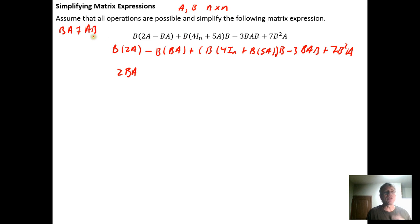Sometimes that might be true, but most of the time this would be a non-equality. So we get minus, and here we have a product of three matrices, so we can use the associative property to do B times B times A, reassociating these terms.